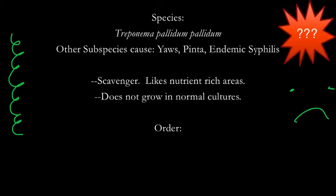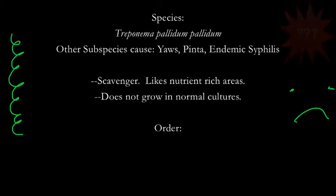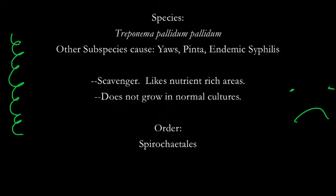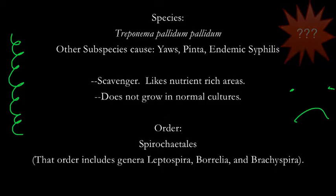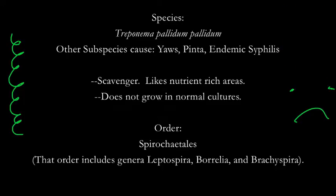Do you remember the order that syphilis belongs to? Syphilis is in the order Spirochaetales. The fact that syphilis is a spirochete is important because Spirochaetales contains three other genera of spiral bacteria that cause human disease: Leptospira, a major cause of animal-transmitted disease worldwide; Borrelia, which causes Lyme disease; and Brachyspira, a rare cause of intestinal infections.